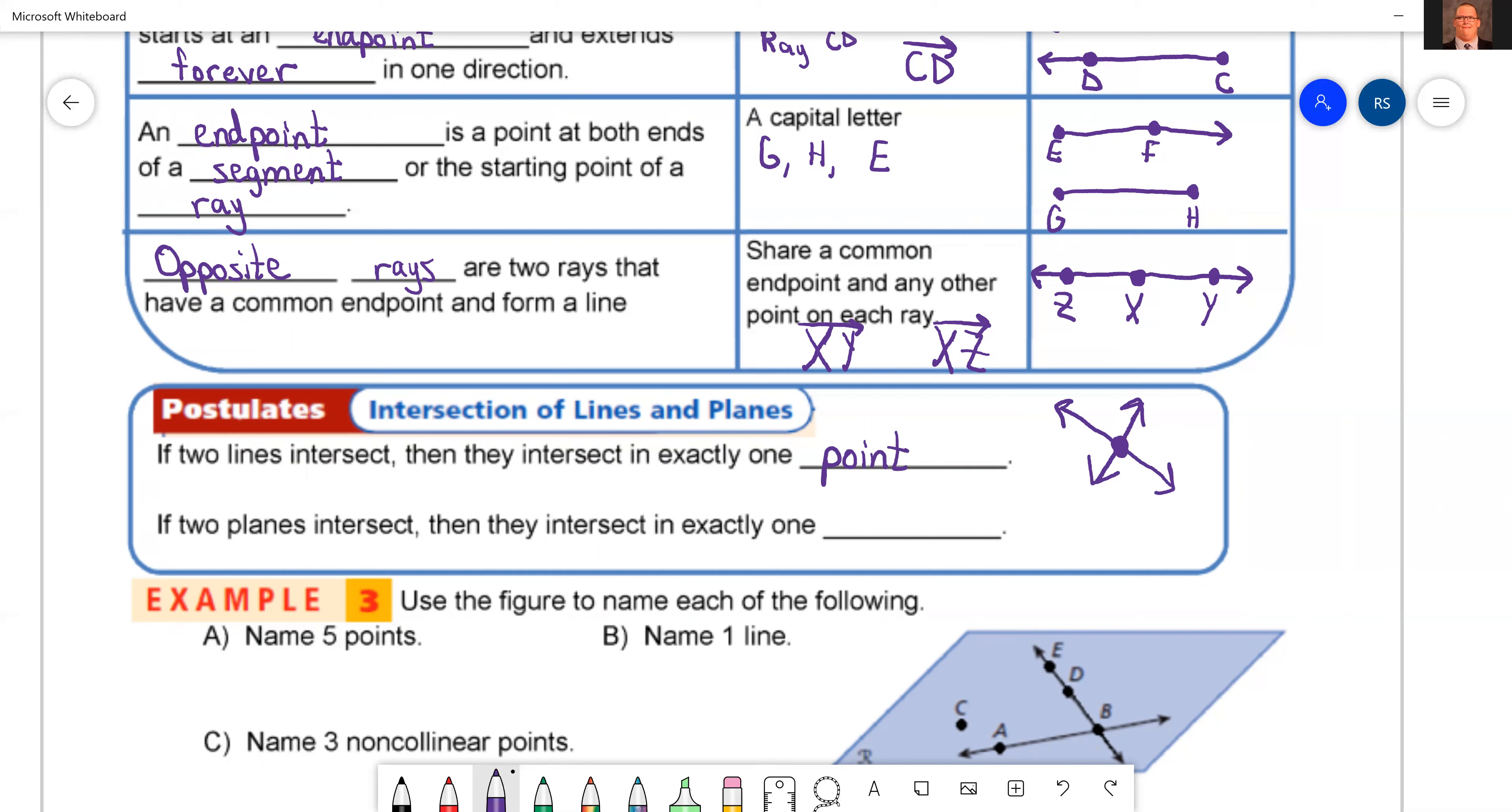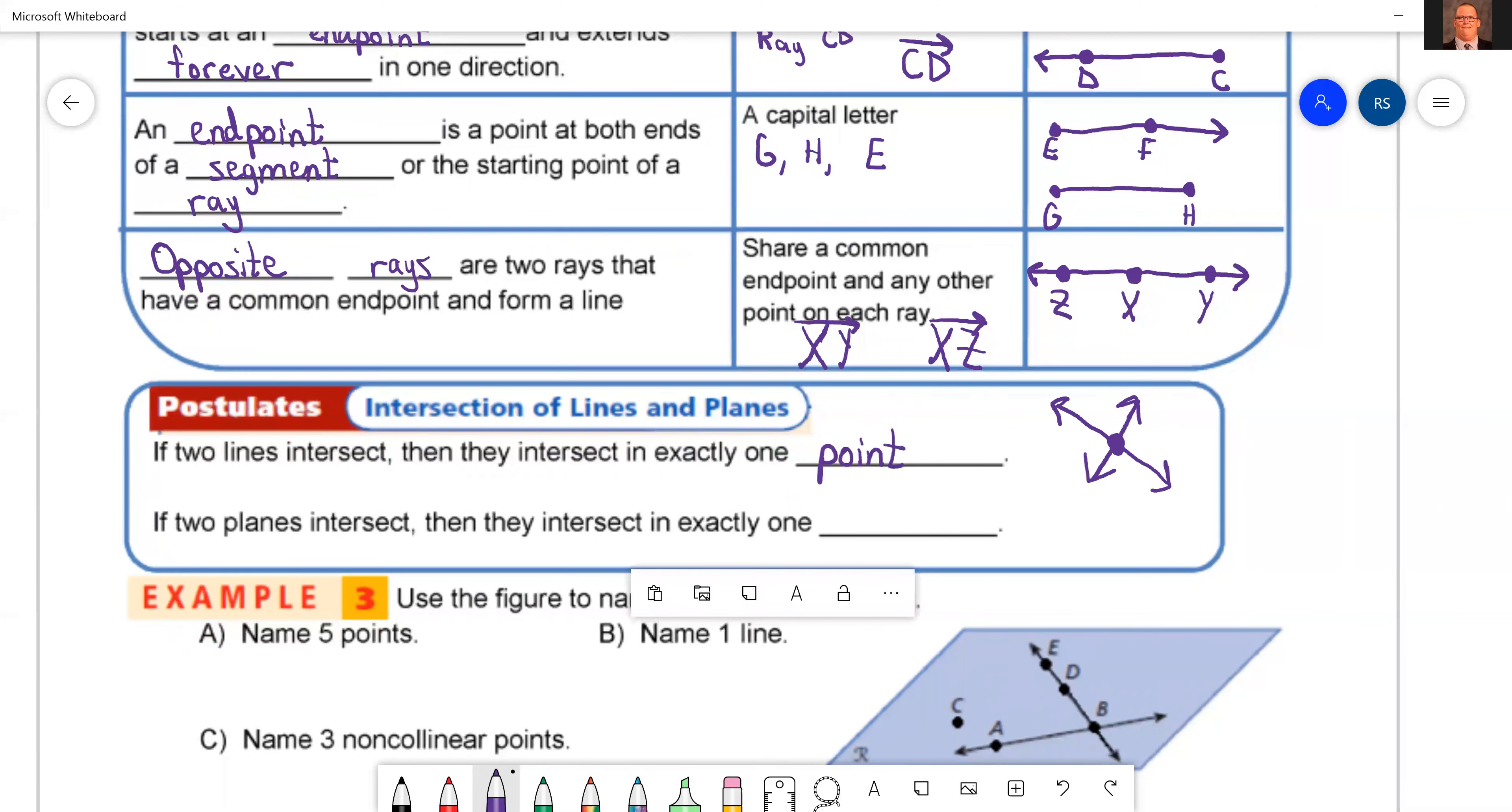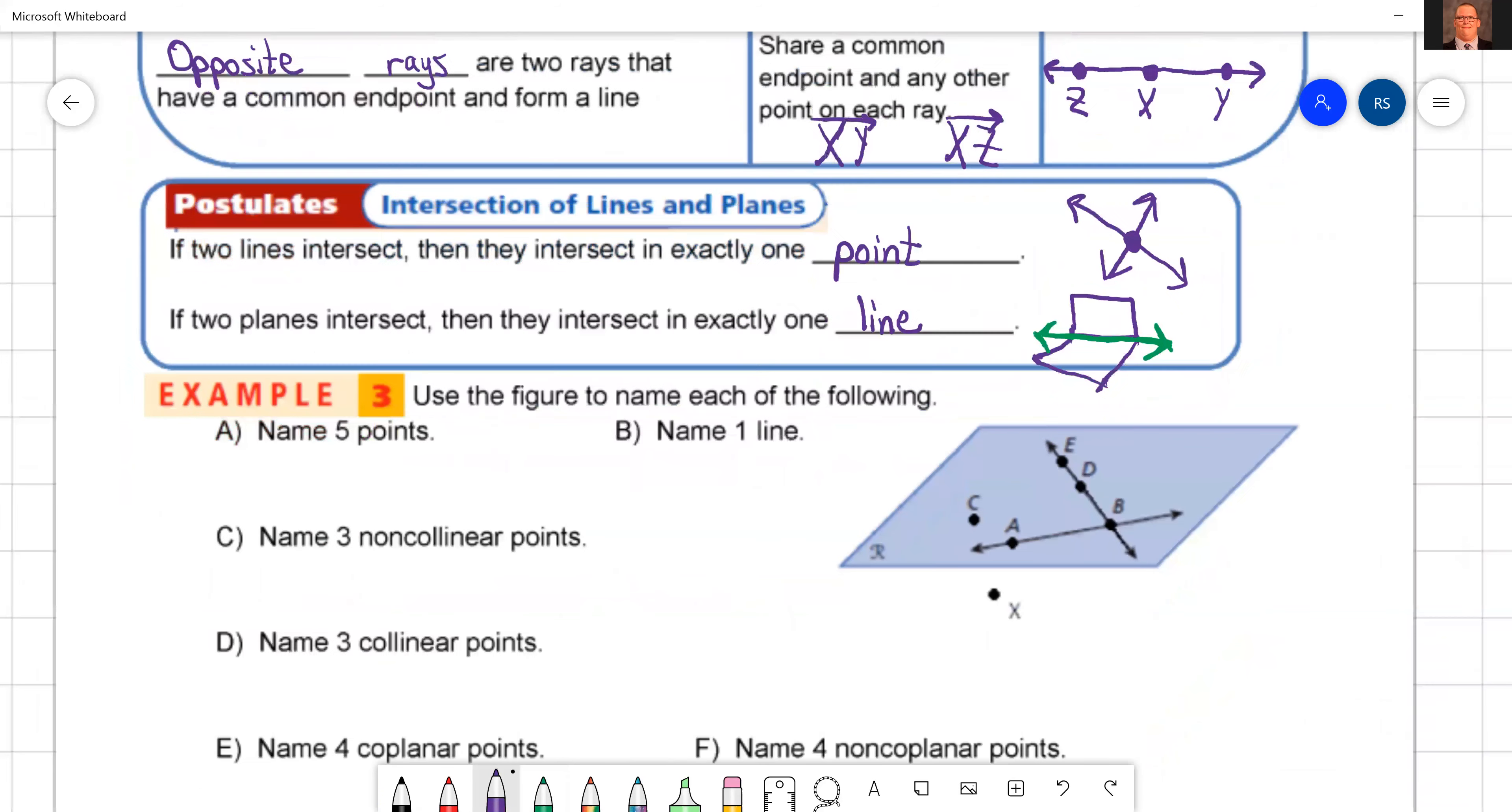If two planes intersect, then they have to intersect in exactly one what? Well, let's try to draw this here. So there is one plane. If I have another, maybe it's going this way. Well, it looks like they cross right here, but remember planes go on forever. So what is this shape called that I just put in green? I want to draw arrows because they go on forever. That's a line. So two planes intersect in exactly one line.